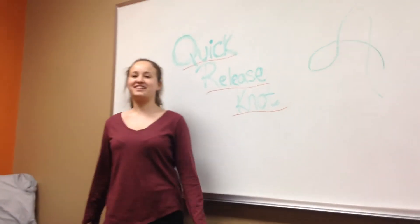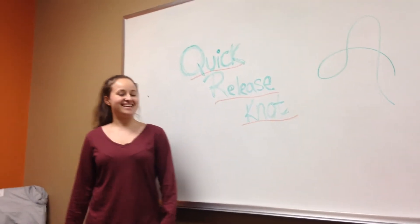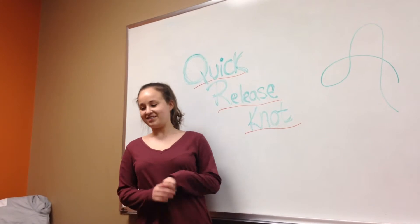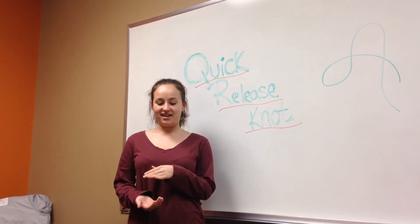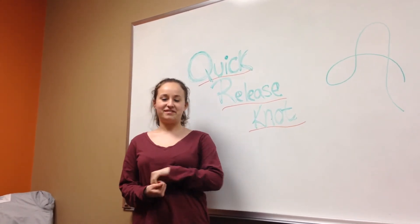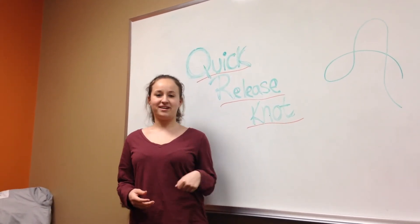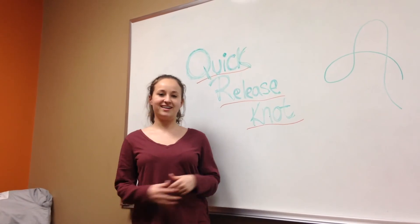The main big benefit of using a quick release knot is so that you can tie your horse or any animal in a way that they can't untie themselves, but if they happen to freak out or get into any sort of trouble or anything like that, you can quickly undo it so that they can get free.